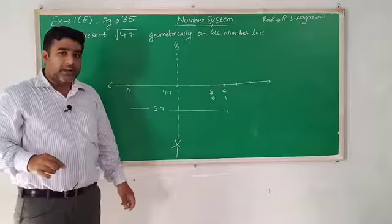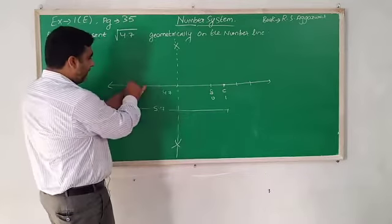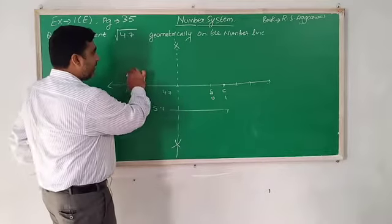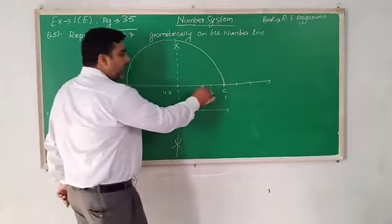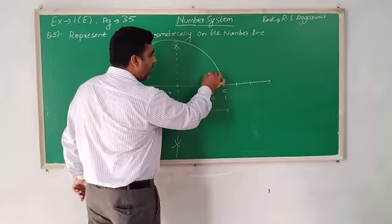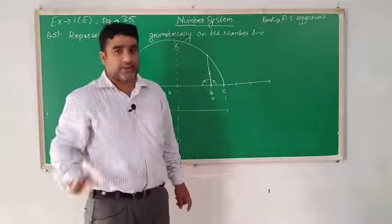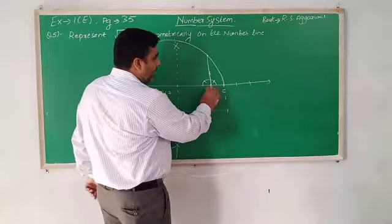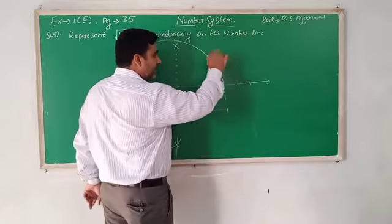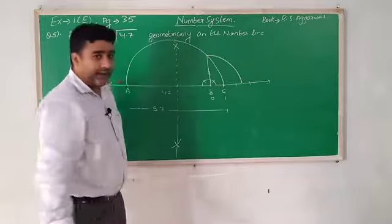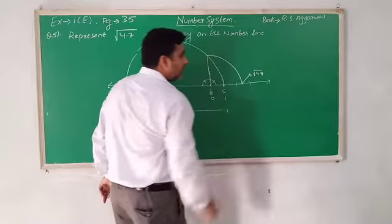You have drawn the perpendicular bisector. Next step: place your compass needle at the midpoint, measure from midpoint to A — draw a semicircle. It should pass through C. Then at point B, erect a 90-degree angle, and bring the arc down. The point where it meets the line is under root 4.7. Is that clear?